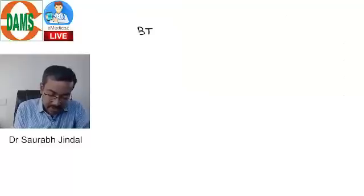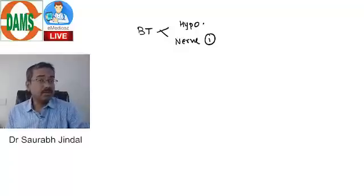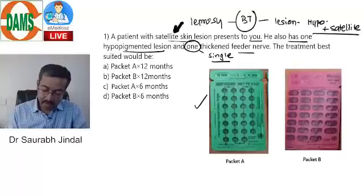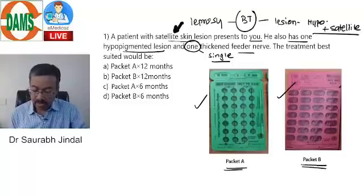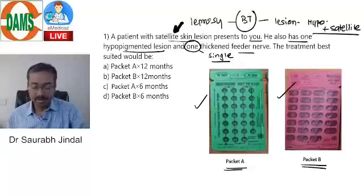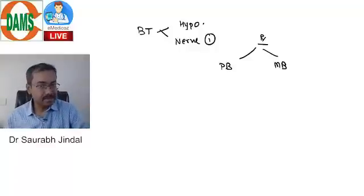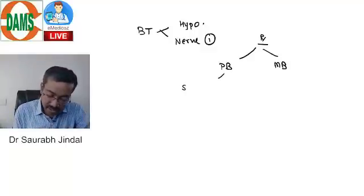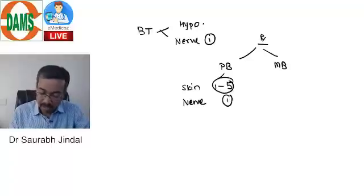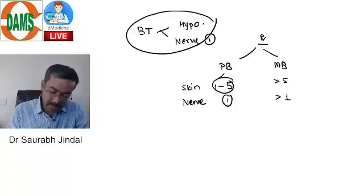In BT Hansen, we see a hypopigmented patch and a single thickened nerve. Treatment for Hansen's disease is always divided into PB (paucibacillary) and MB (multibacillary) — not by TT, BT, BB, BL, or LL spectrum. In PB, skin lesions are usually between one and five, and there is usually one single thickened nerve. MB is when you have more than five patches and more than one thickened nerve. This case is clearly a PB spectrum.